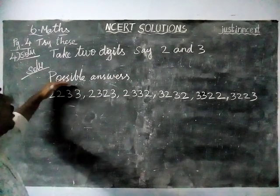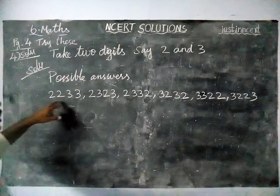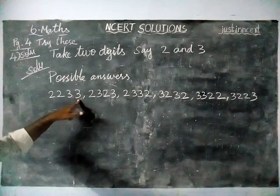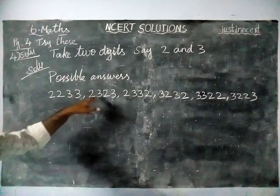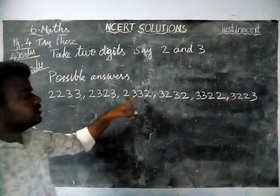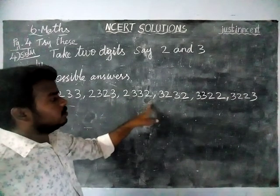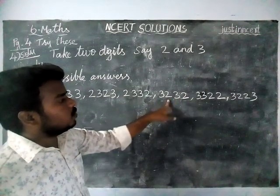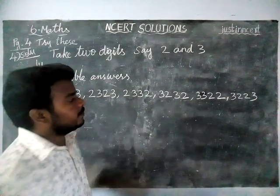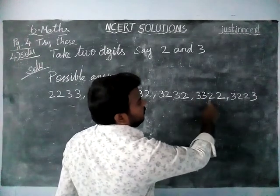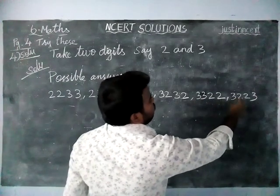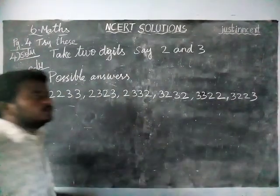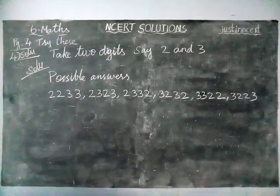So what are the possible answers? The possible numbers are: 2233, 2323, 2332, 3322, 3223. These 6 possible answers are there.